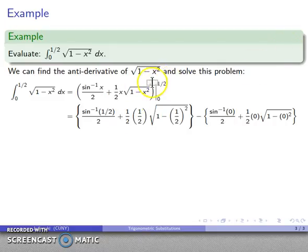Substituting in 1/2 gives me this mess, substituting in 0 gives me this mess, and after all the dust settles, I get as my final answer pi over 12 plus one quarter square root of three over four.